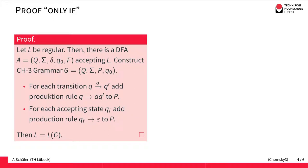For each transition in the automaton — if we are in state Q, read an A, and move to state Q' — we add a production rule that mimics exactly this behavior. If the rightmost non-terminal is Q, then we can add an A and the rightmost non-terminal becomes Q'.